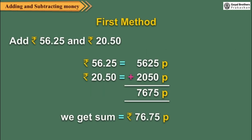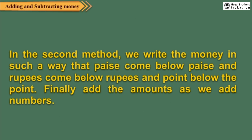Look at the example shown here. In the second method, we write the money in such a way that paise comes below paise, and rupees come below rupees, and point below the point.